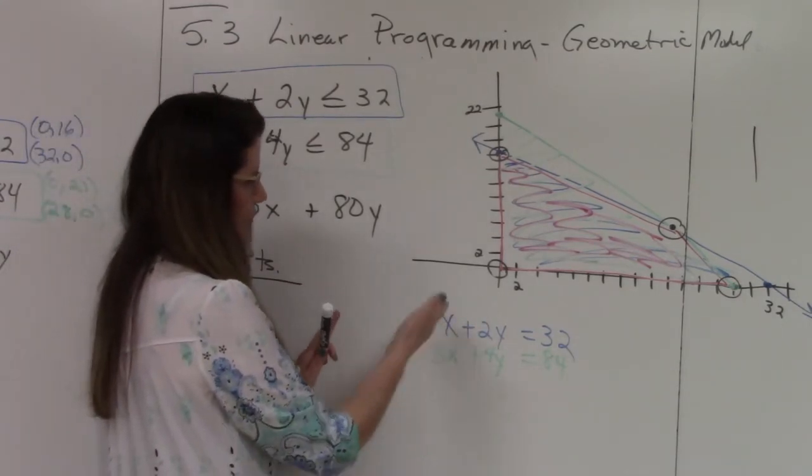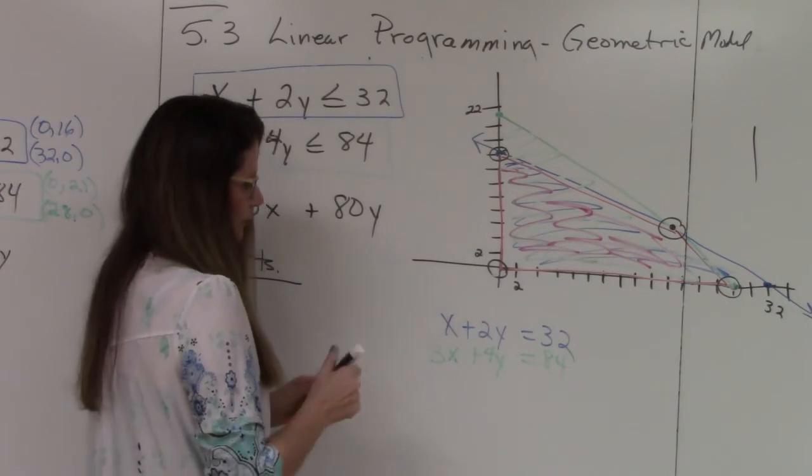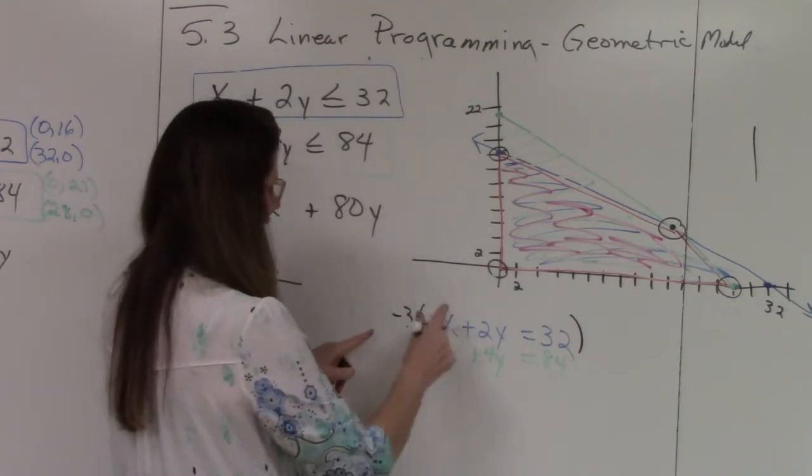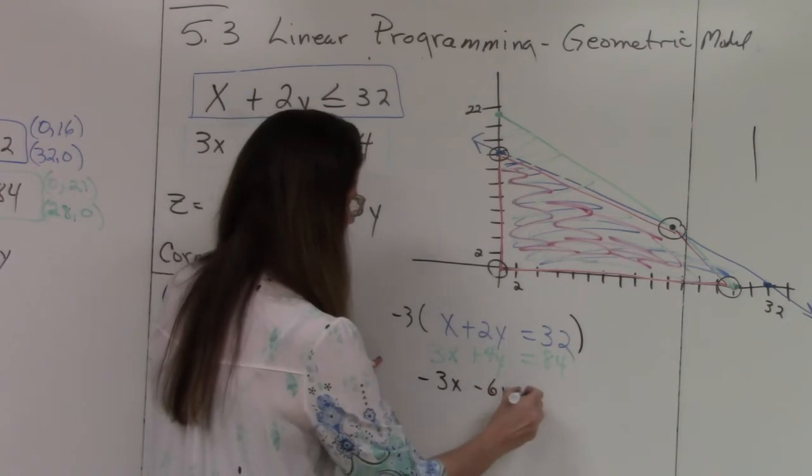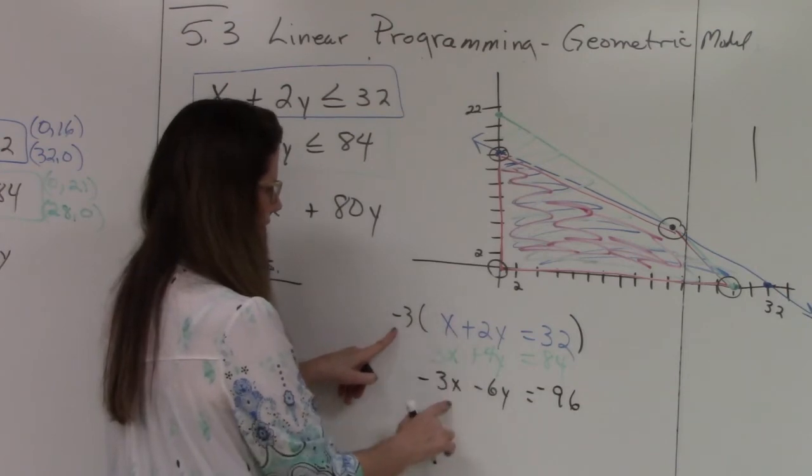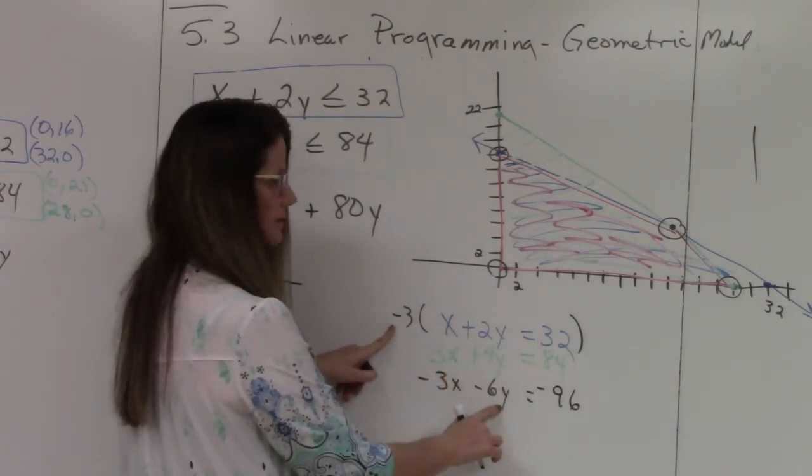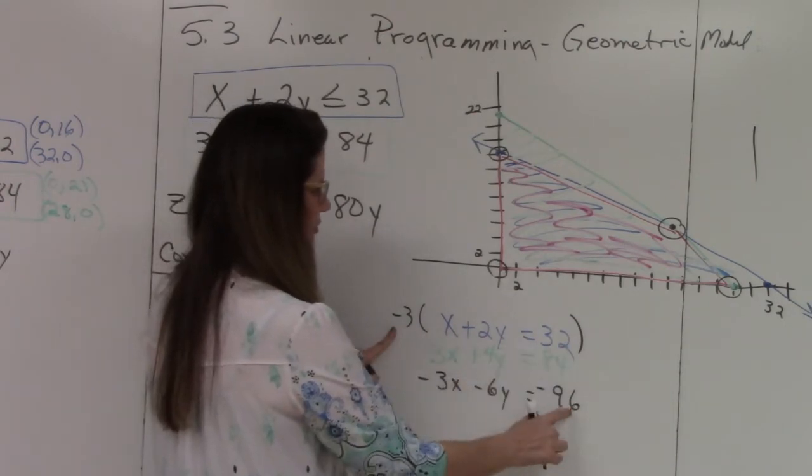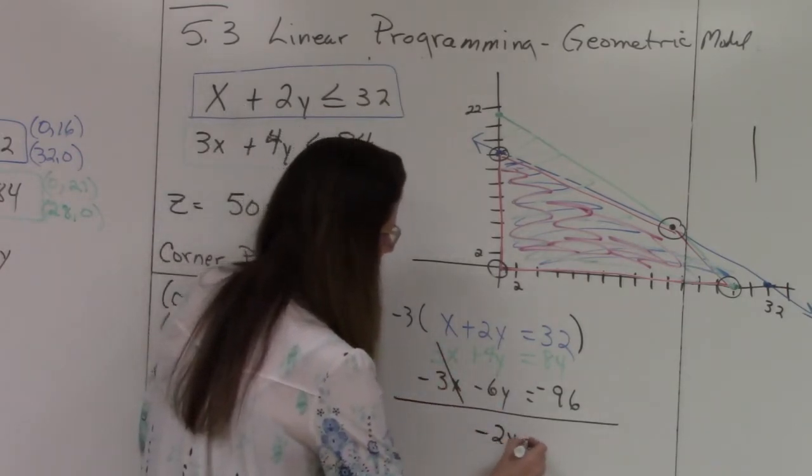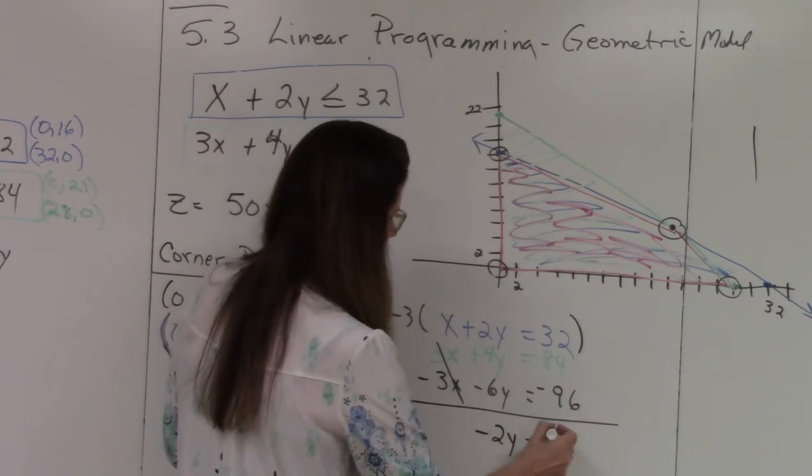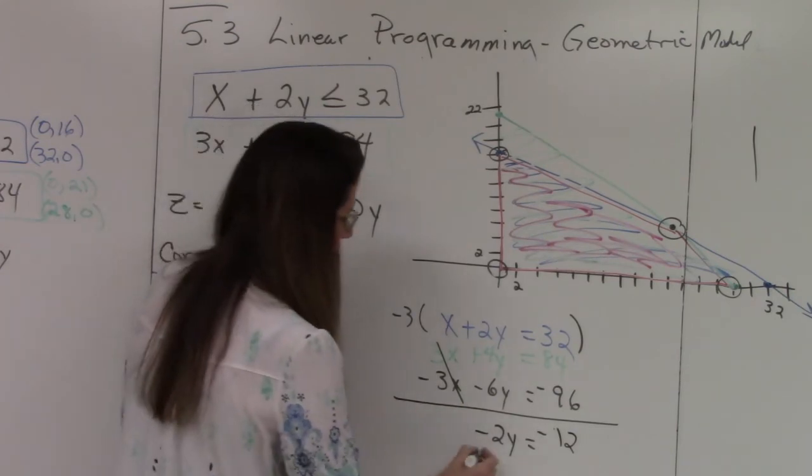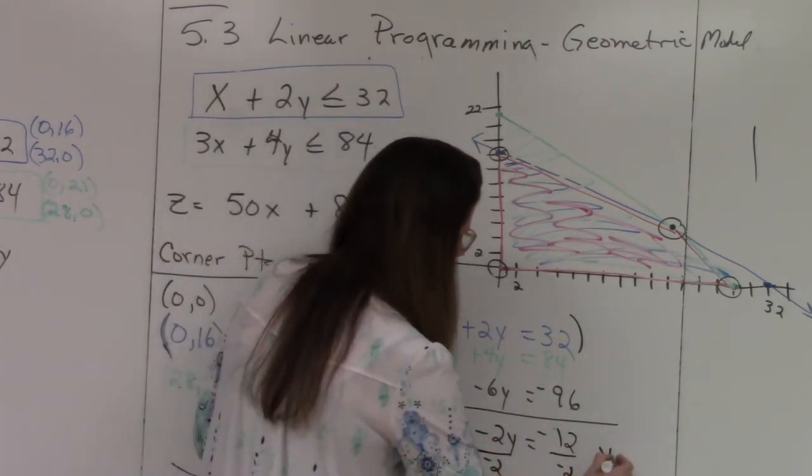And then the green line is 3x plus 4y is equal to 84. So now we're going to use elimination. So this was what you learned. I believe it was 4.1. Okay. So here we go. You can pick either one. You can either get rid of the x or get rid of the y. It's your choice. For our purposes, I'm just going to multiply everything through by negative 3. So I get negative 3x minus 6y equals a negative 96. Now I can add. The x's go away. I end up with a negative 2y equals a negative 12. And then I'm going to divide both sides by negative 2. So my y equals 6.